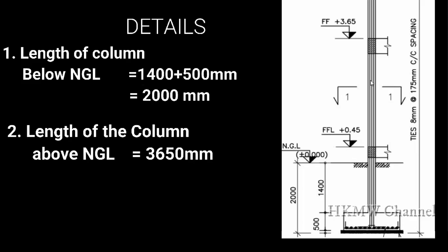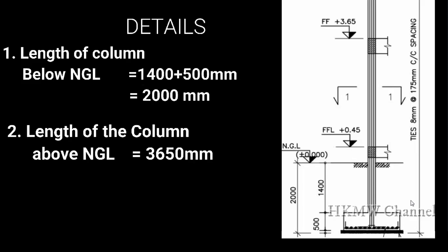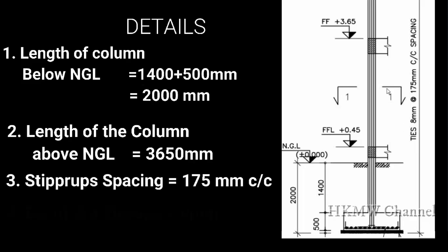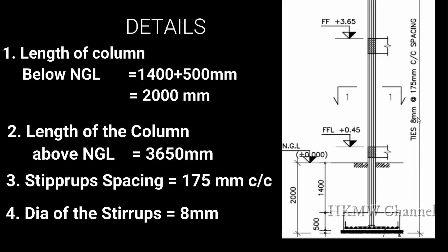The length of the column above NGL is 3650 mm up to the first floor top. Since each rod is cut into approximately 6 meters, we tie stirrups up to 6 meters as well. The stirrup spacing is given as 8 mm ties at 175 mm center-to-center spacing, with the stirrup bar diameter being 8 mm.